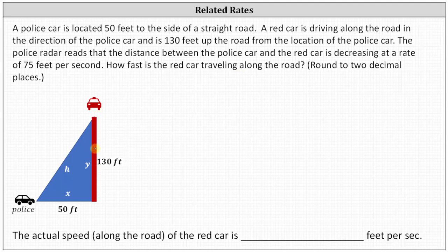This red segment is the road. The police car here on the left is 50 feet to the side of the road, and the red car is 130 feet up the road, moving down the road toward the direction of the police car. Notice if we draw a segment between the police car and the red car, we have a right triangle where we can label the short leg X, the long leg Y, and the hypotenuse H.